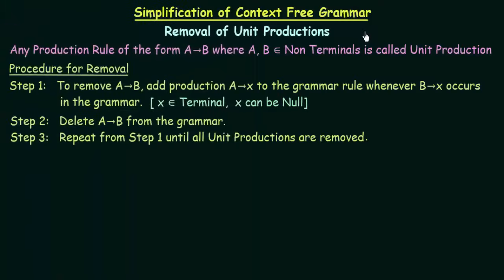In the last lecture we studied about the reduction of context-free grammar, which was the first step in the simplification of context-free grammar. In this lecture we will be studying about the next step in the simplification of CFG, which is removal of unit productions. First, let's understand what unit productions are.